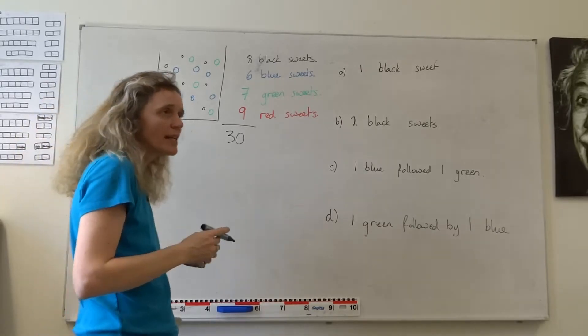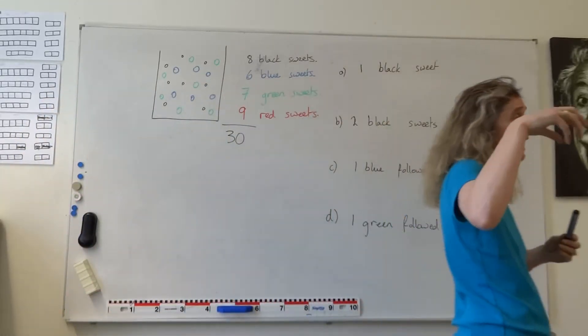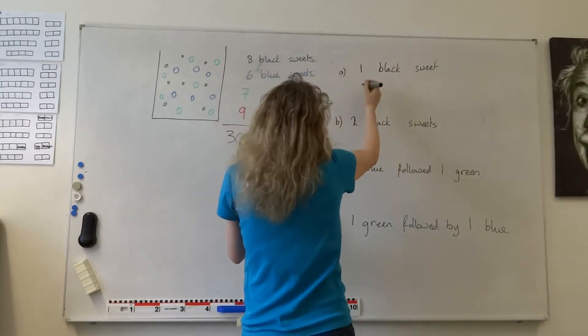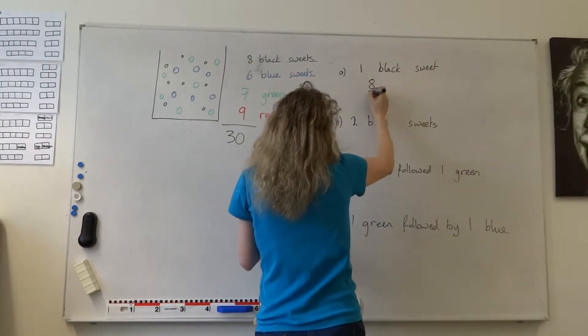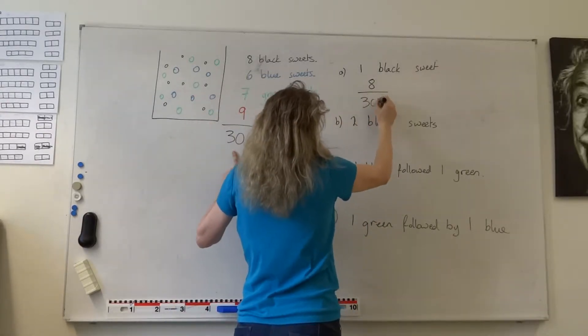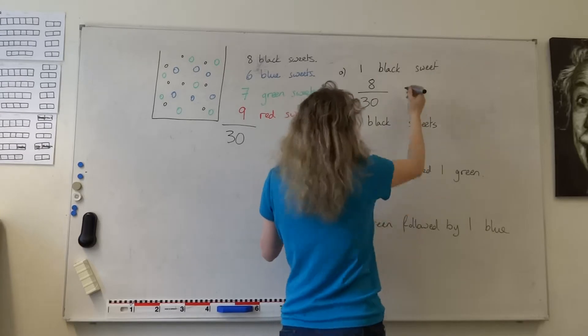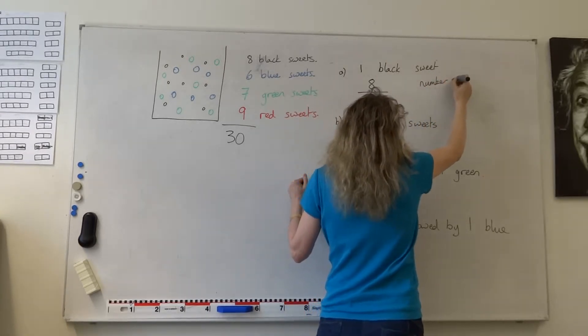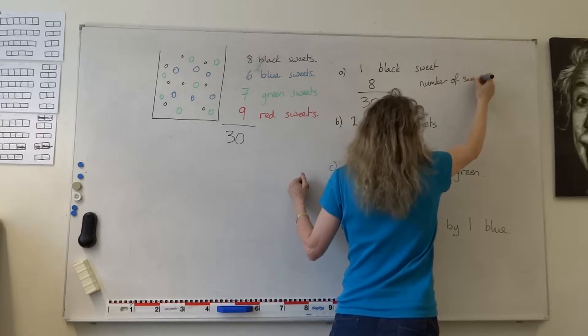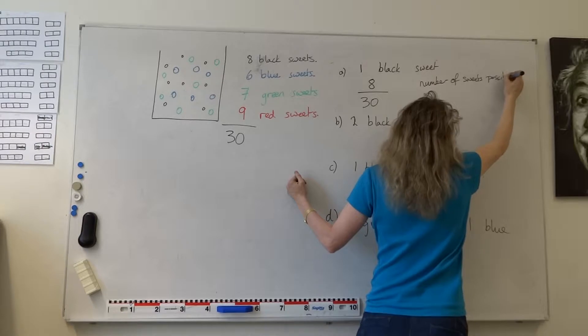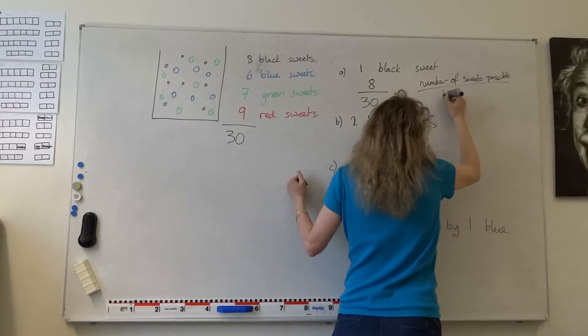So what's the chance of us randomly putting our hand in and getting out a black sweet? Well, there are 8 black sweets in total, so the chance of us getting a black sweet is 8 chances out of the number of sweets in total. So what we have to think of when we're talking about probability: number of sweets you're trying to find, of that color, divided by total sweets.